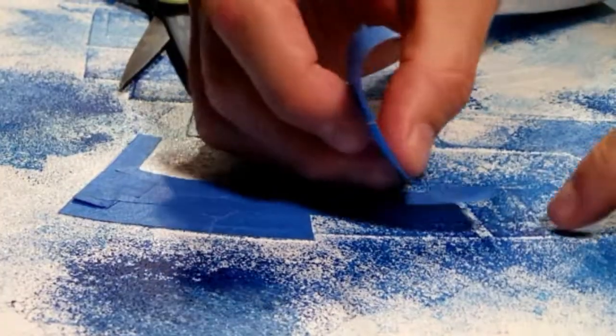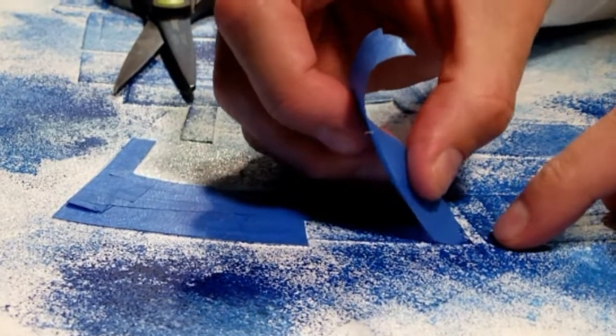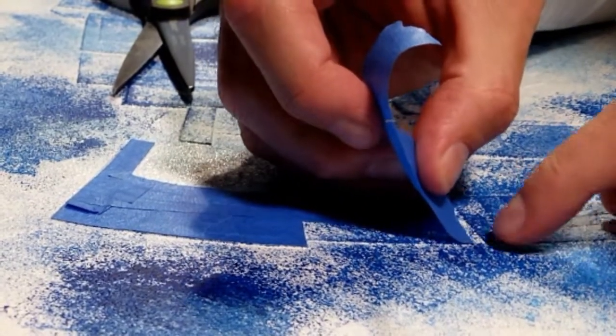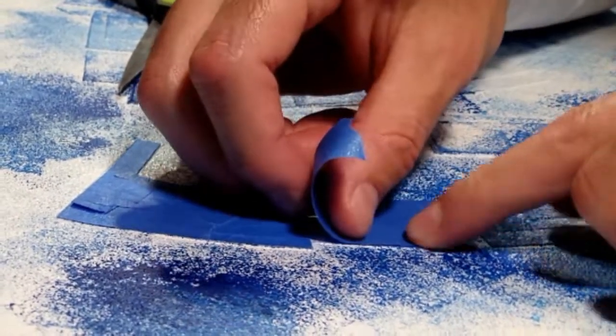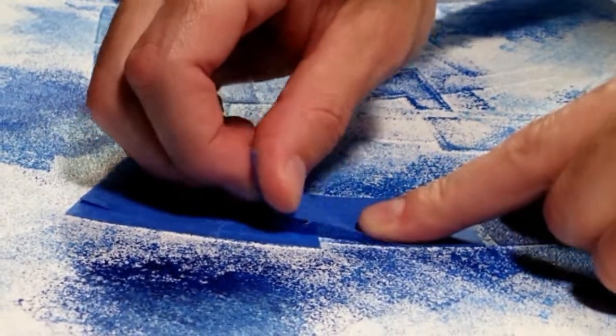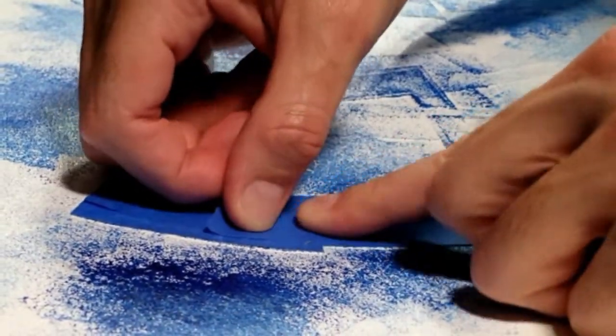This portion of the project is really self-explanatory. You can see the painter's tape and the scissors, and that's really all you need. Just continue to tear off the tape, cut it as you see fit, and apply it to the shape that you're taping to.